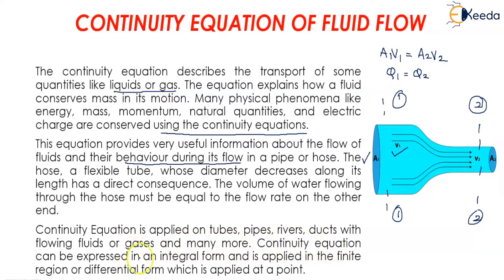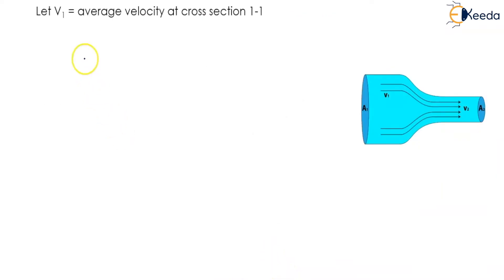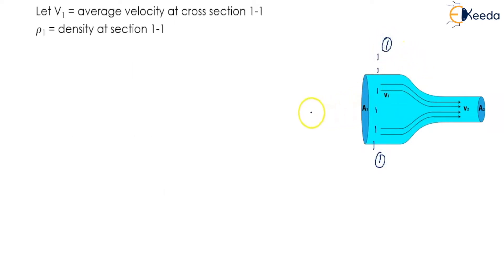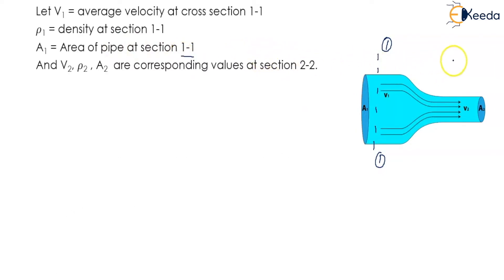The continuity equation can be expressed in an integral form applied in a finite region, or in differential form applied at a point. Let v1 be the average velocity at cross-section 1, rho1 be the density of the fluid at section 1, and A1 be the area of the pipe at section 1. Similarly, v2, rho2, and A2 are the velocity, density, and area respectively at section 2.